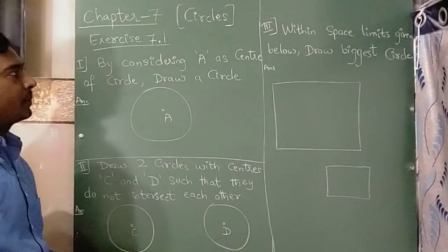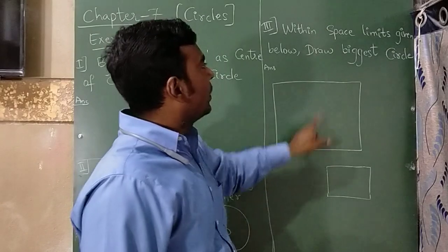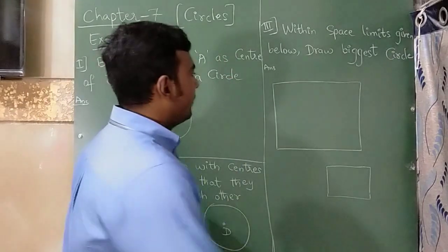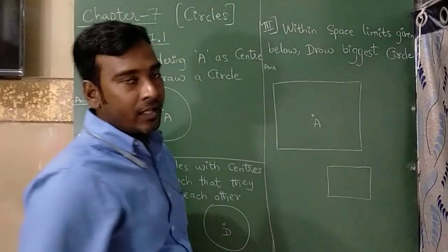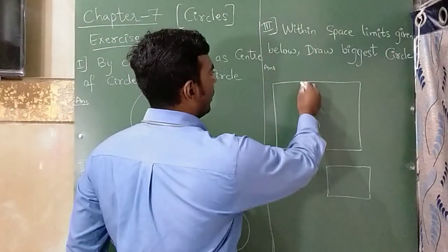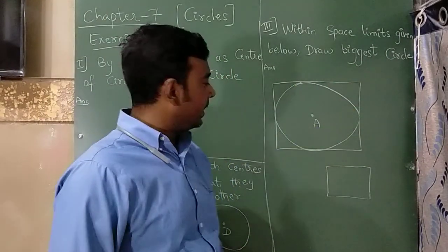This completes your answer. The third question is, within space limits given below, draw biggest circle. So if I consider exactly at the center of this square, from here if I draw the circle, this will be the biggest circle.